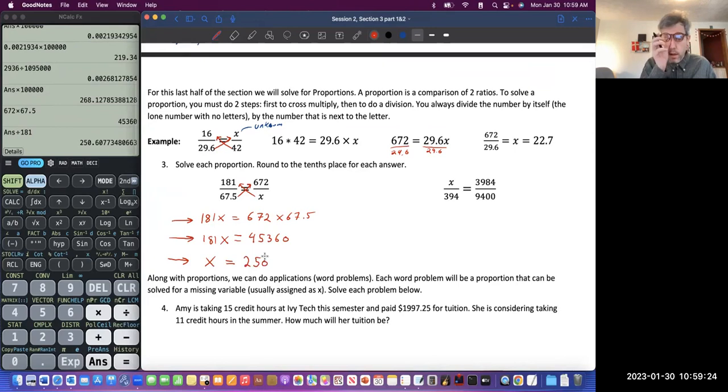How should I round? This says round to the 10th place, so I'm just going to follow the instructions. And that would be a 6 in the 10th place. There's a 6 in the 10th place.